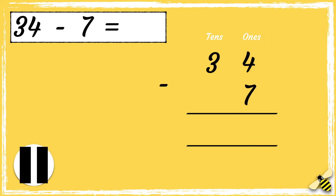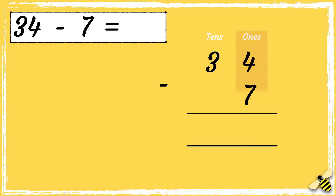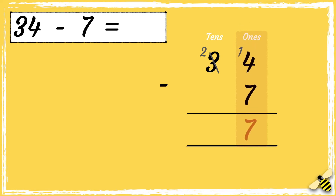Pause the video to give you time to work out the answer. Press play when you're done. We start from the right hand side, so we're starting with the ones. We can't subtract seven from four, so we need to borrow a ten from the tens column. If we borrow a ten, three tens becomes two tens. So now we have 14 take away seven, which is seven.